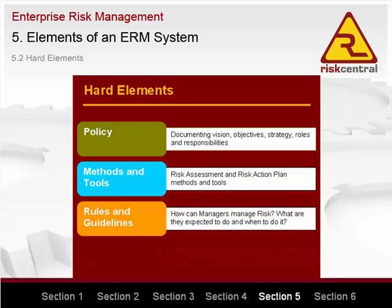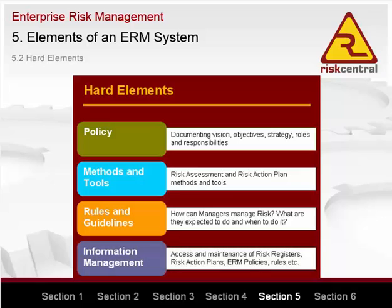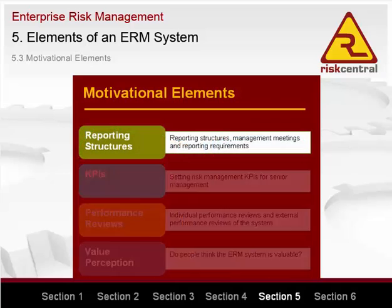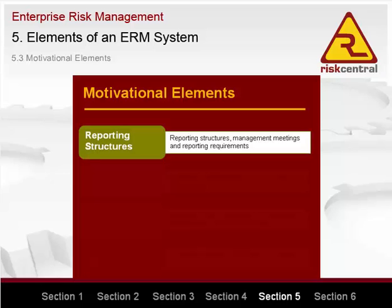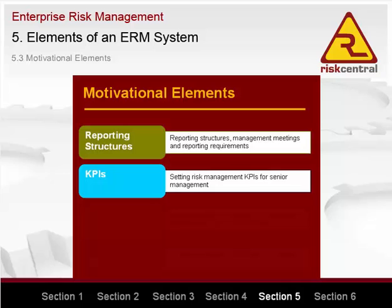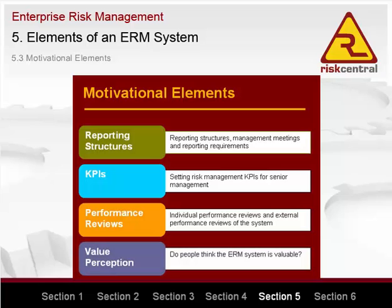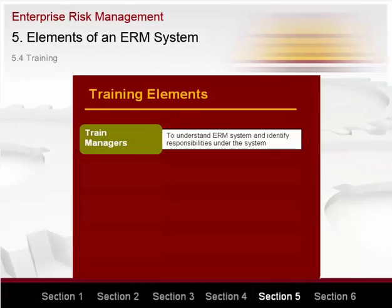Further hard elements include: rules and guidelines — how are managers expected to manage risk, what are they expected to do and when; and information management — access and maintenance of information such as risk registers, risk action plans and ERM policy and rules. The motivational elements help ensure that people follow the rules and guidelines. These include: reporting structures and management meeting requirements; KPIs — setting risk management KPIs for senior management; performance reviews — individual performance reviews and external ERM system performance reviews; and value perception — do people think the ERM system is valuable? Training may also be required to ensure managers understand the ERM system and their responsibilities.